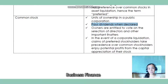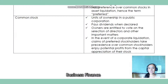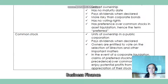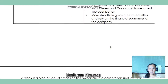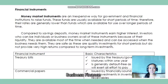For common stock, these are units of ownership in a public corporation. Common stock also pays dividends when declared, similar to preferred stocks. However, owners of common stock are entitled to vote on the selection of directors and other important matters. In the event of corporate liquidation, claims of preferred stockholders take precedence over common stockholders. Common stockholders also enjoy potential profits from the capital appreciation of their stocks. And that's it for the discussion of financial instruments.